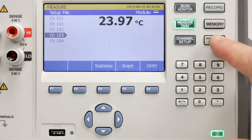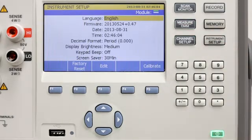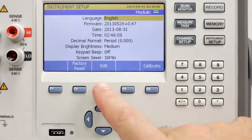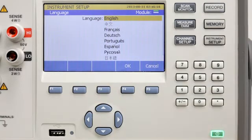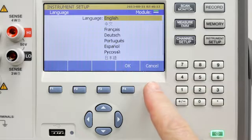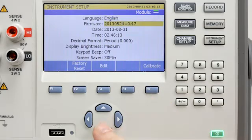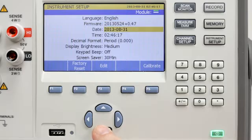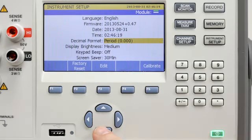Now let's set up the unit. Push the instrument setup button to get started. This allows you to set up your preferences. Menus and displayed text are available in nine languages. You can view firmware level, set date and time and decimal format, set display brightness, keypad beeps, and more.